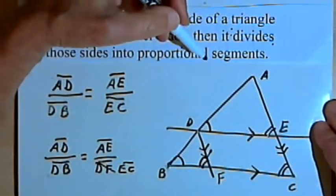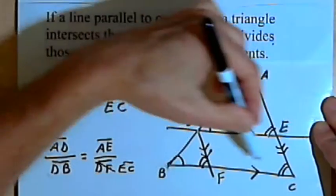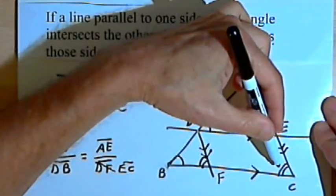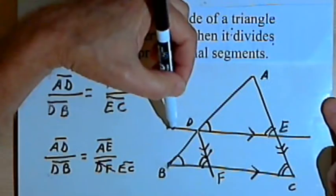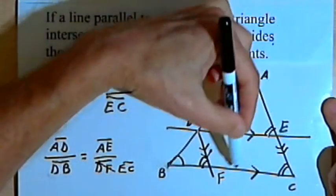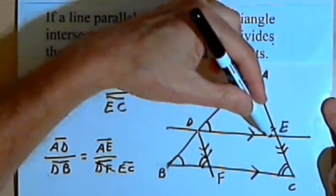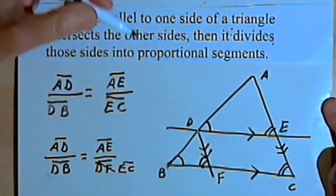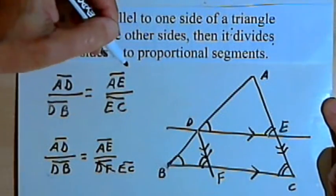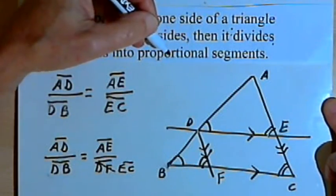To summarize this theorem one more time: if I've got a triangle and I've drawn a line parallel to one side of the triangle so that it intersects the other two sides, then it's going to divide those other two sides into proportional segments.